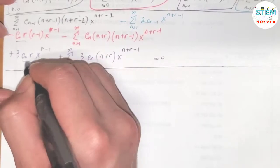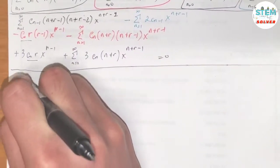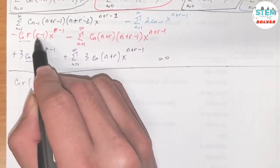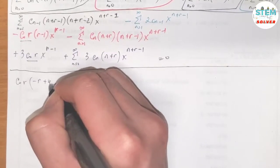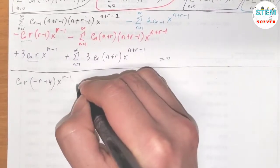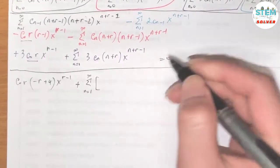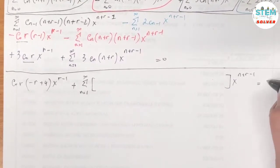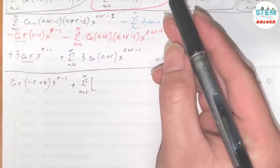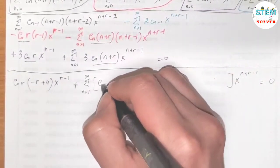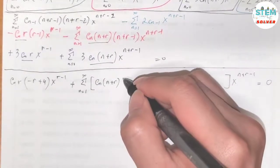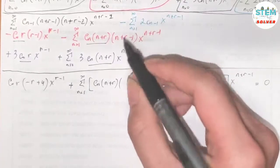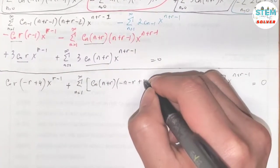For the x to the r minus 1 terms, we have c_0 times r in common; factoring out gives c_0 times r times (negative r plus 1 plus 3), which simplifies to c_0 times r times (negative r plus 4) times x to the r minus 1, plus the series from 1 to infinity. The terms in the series share c_n(n plus r), which we factor out, leaving negative (n plus r) plus 4 from distributing the negative sign, giving negative n minus r plus 4. Plus c_{n-1} with (n plus r minus 1)(n plus r minus 2) minus 2 — all multiplied by x to the n plus r minus 1.